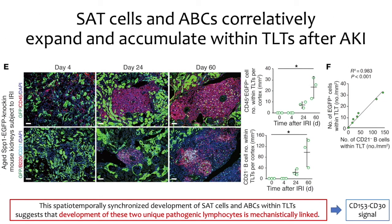Interestingly, SAT-cells and ABCs appear simultaneously with TLT formation. By in situ hybridization and reporter mouse analysis, we also found that SAT-cells and ABCs are located almost exclusively within TLTs and found very close to each other. This spatiotemporally synchronized development of SAT-cells and ABCs within TLT suggests that the development of these two unique age-dependent lymphocytes is mechanistically linked. To identify the interaction molecule between SAT-cells and ABCs, we performed unbiased ligand-receptor analysis and identified CD153–CD30 as a signaling pathway between SAT-cells and ABCs.